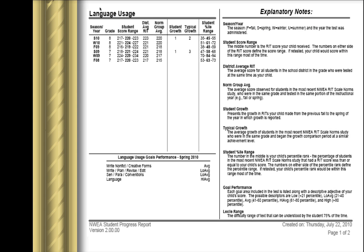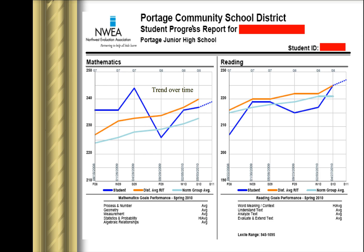At the bottom of this report, language usage is also provided because we do that test in addition to reading and math at the junior high, and then all the different terms that I highlighted are also explained below. The same information on the second part of this report is provided in a line graph — we have mathematics and reading. There are three lines: the dark blue is the child's scores over time, the orange is the district average over time, and the blue is the national average over time.